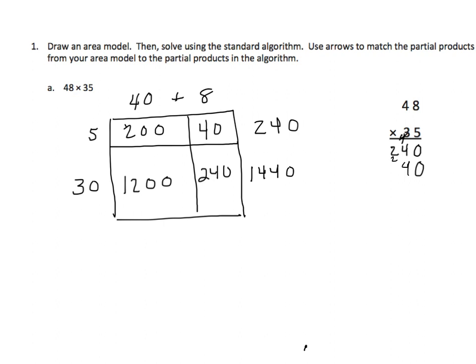And I'm going to add my 2 hundreds to it, so I get this. Now you can see that our partial product in the area model corresponds perfectly to our partial products in the standard algorithm. Now all we have to do is find the sum of the partial products. So 0 plus 0 is 0, 4 plus 4 is 8, 2 plus 4 is 6, and 1.